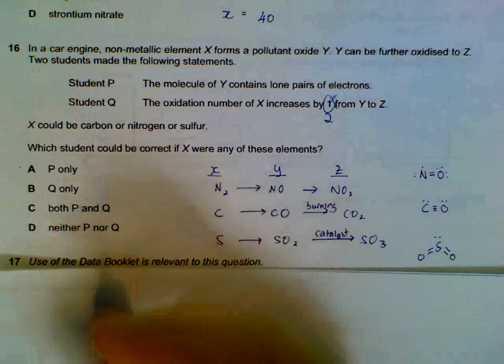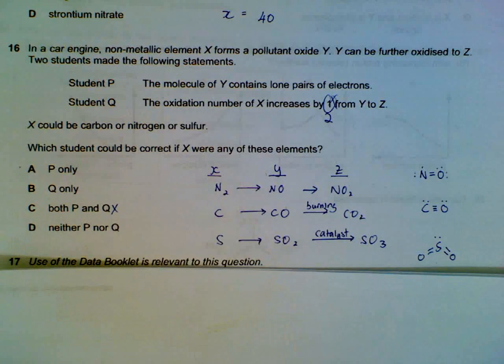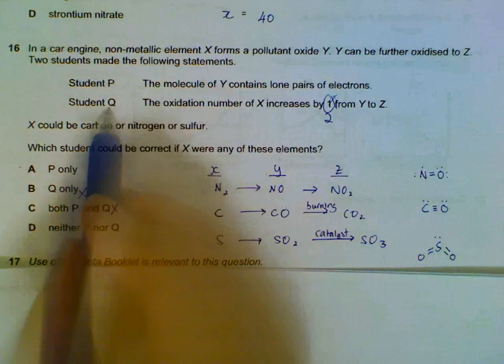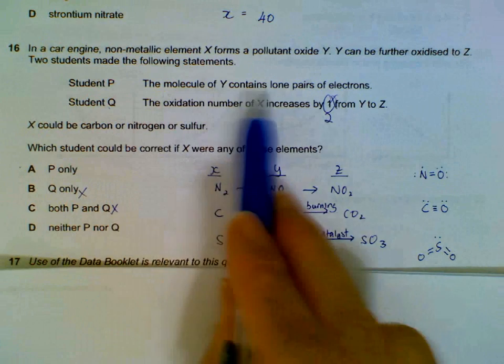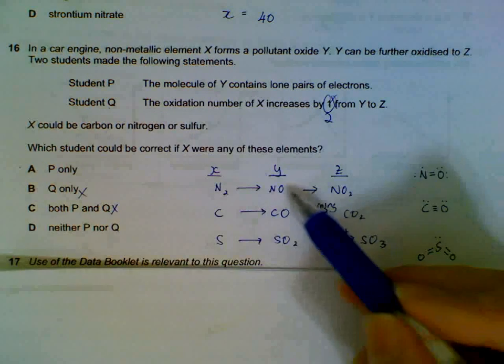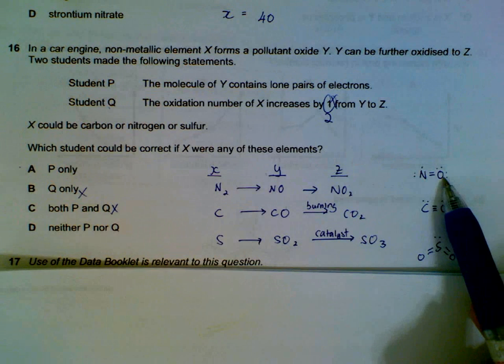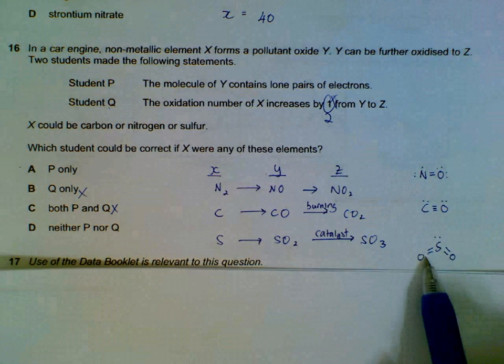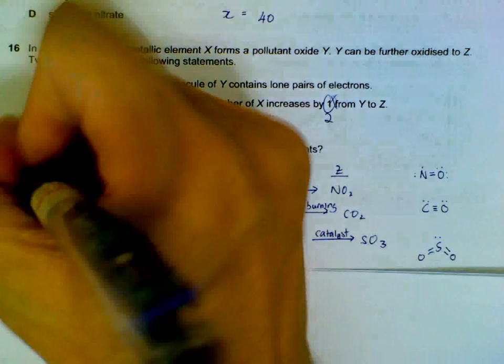So student Q is wrong. Then we check P. P says that molecule of Y contains lone pair of electrons. So we are comparing these substances: nitrogen oxides, carbon monoxide, sulfur dioxide all contain lone pair. So P is correct.